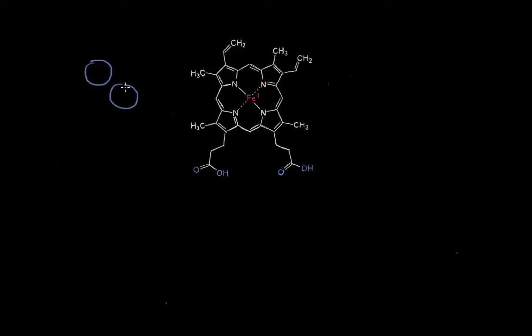Hemoglobin is a protein with four different subunits. And at the core of each subunit is a heme molecule, and these heme molecules have this iron group that is essential for binding oxygen.